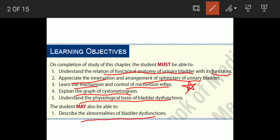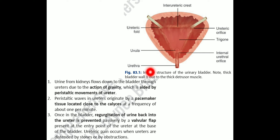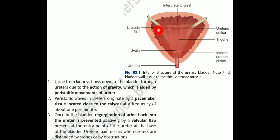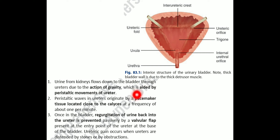Starting with the internal structure of the urinary bladder — a coronal section shows the trigone, the inter-ureteric crest, ureteric fold, uvula, urethra, and ureteric orifice. Urine from the kidneys flows to the bladder through the ureters due to gravity.